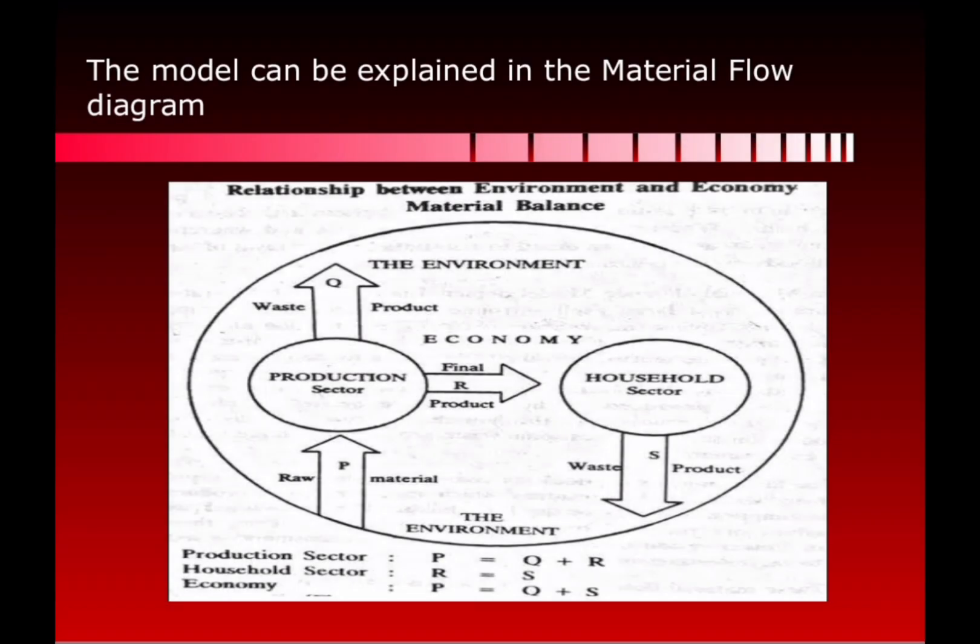The next diagram is a material flow diagram showing the relationship between the environment and the economic material balance. The left side is the production sector and the right side is the household sector. The production sector divides outputs into two products: waste products, which are recycled back to the environment, and final products, which are consumable goods for the household sector. In the production sector, P equals Q plus R; in the household sector, R equals S; and for the economy, P equals Q plus S, where Q denotes waste products, R denotes final products, P denotes raw material, and S denotes waste products from households.